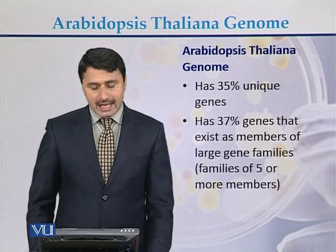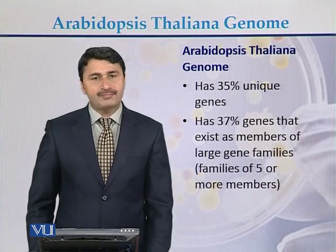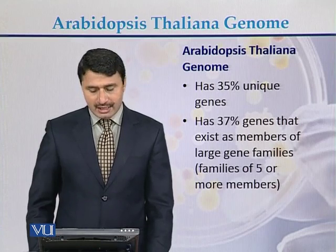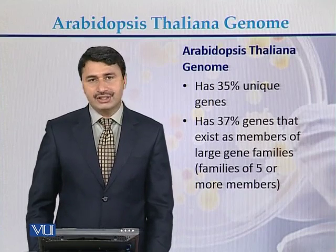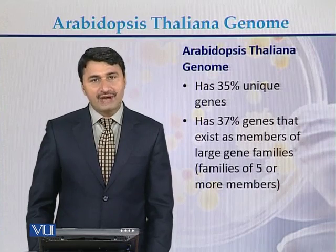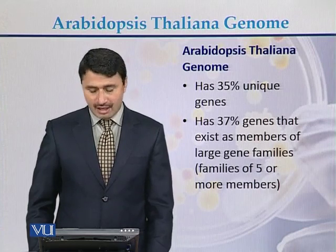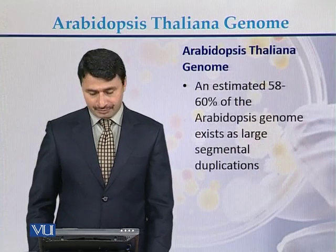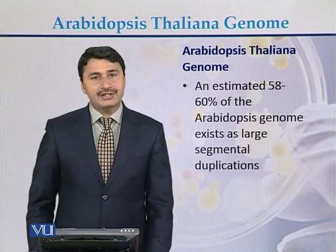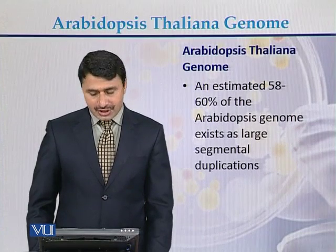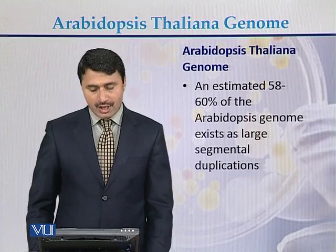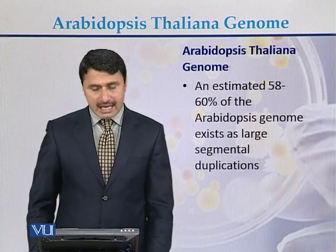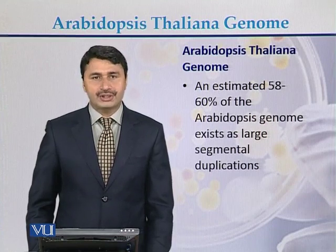Arabidopsis thaliana has 35% unique genes and 37% genes that exist as members of large gene families — meaning families of five or more proteins. An estimated 58 to 60% of the Arabidopsis thaliana genome exists as large segmental duplications.